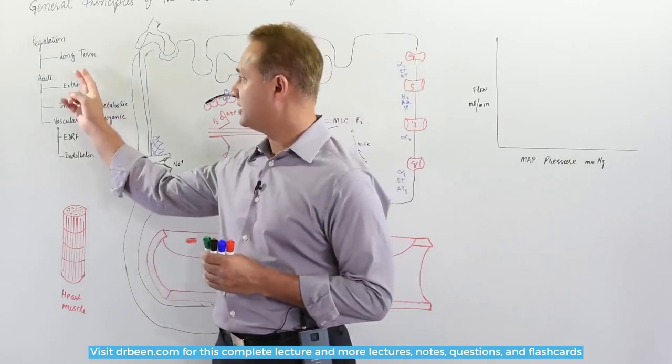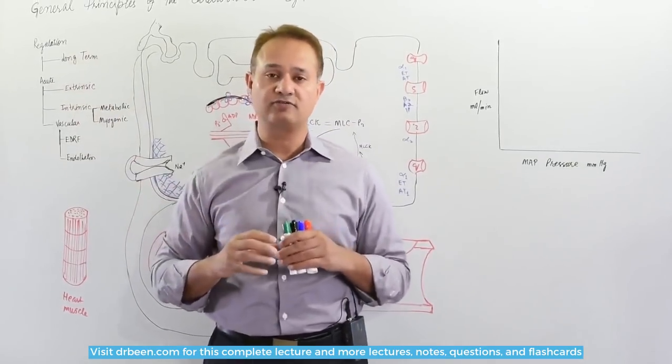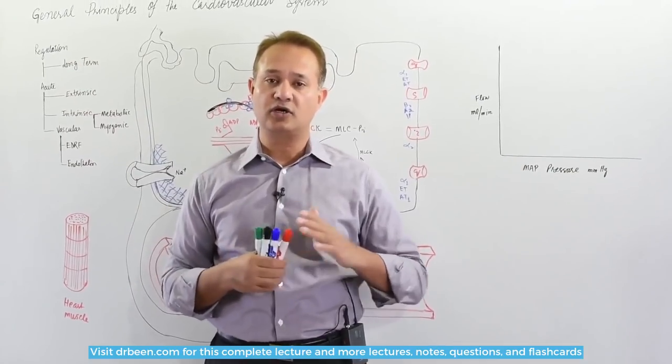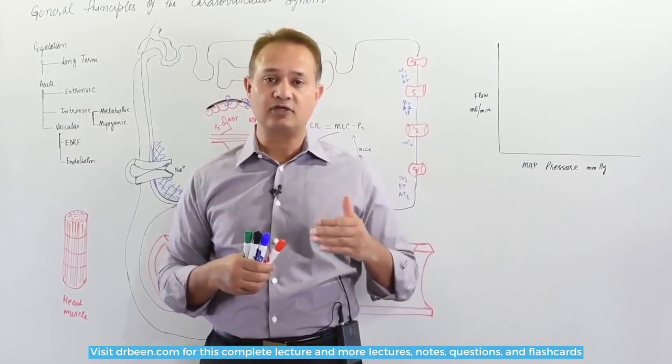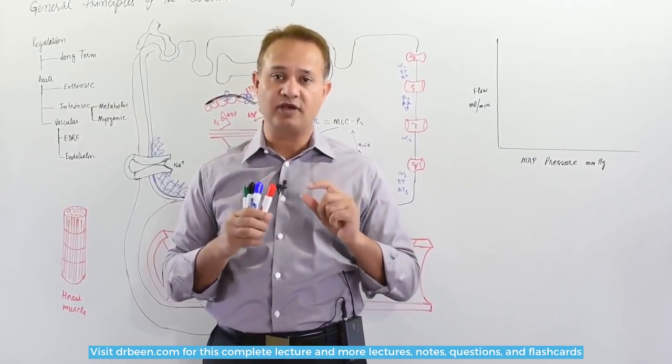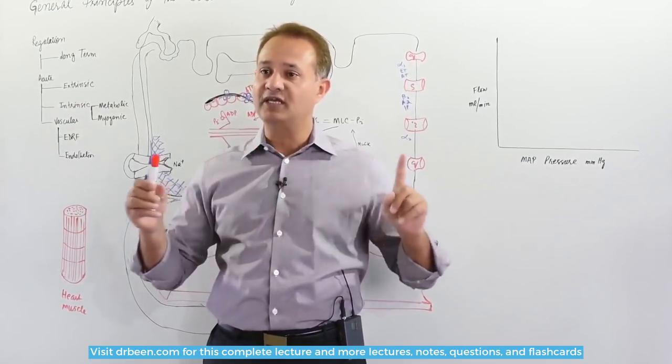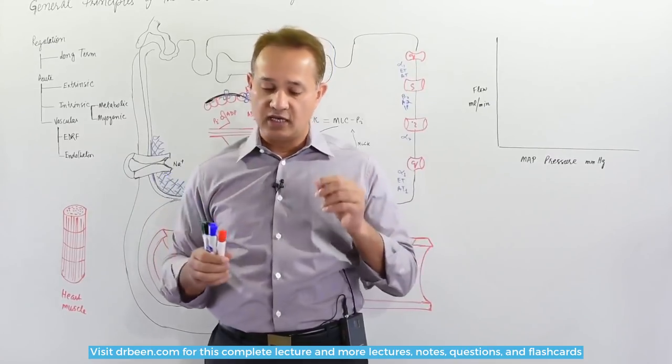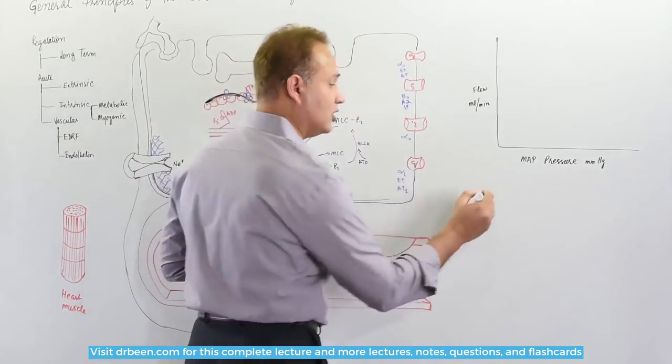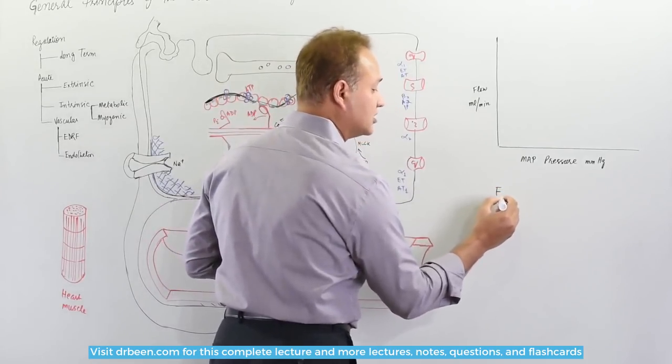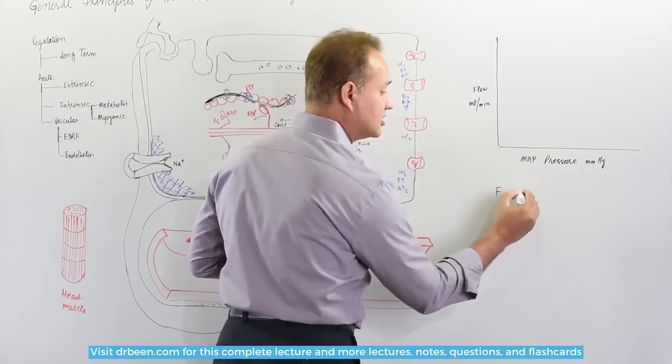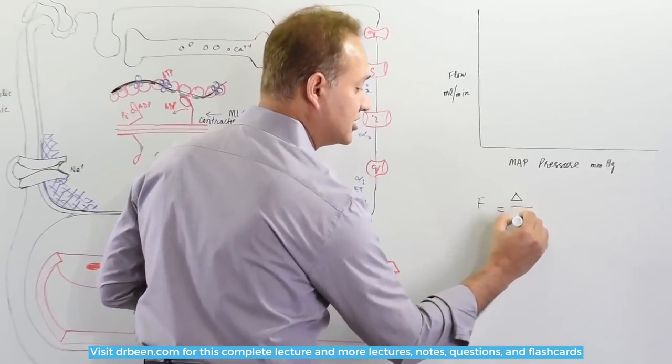The first thing to understand is that when we talk about the regulation of blood, we do not talk about the regulation of blood pressure. Instead, we talk about the regulation of blood flow over a changing pressure. Also understand that we know the equation for flow equals delta P over resistance.